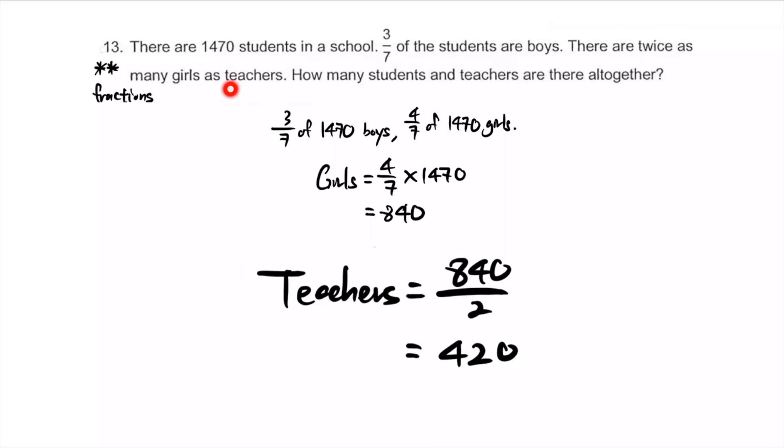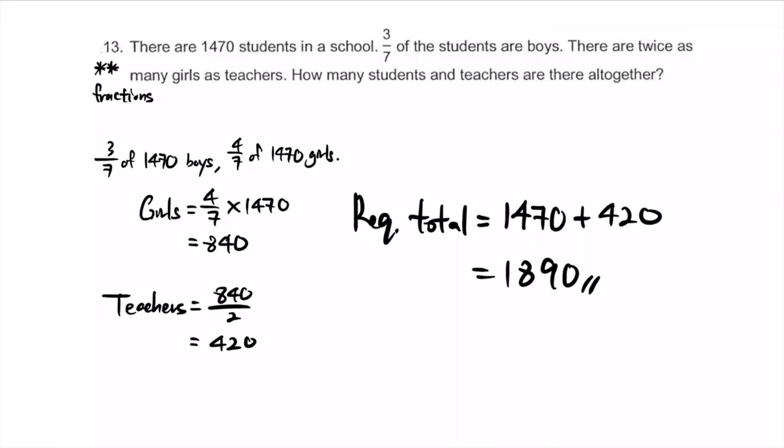That also means teachers are half of girls. So whatever the number of girls is, half that is the number of teachers. We're going to add students - that's boys and girls - so 1470 students added together with what we've just found, the number of teachers, and obtained 1890 as the answer.